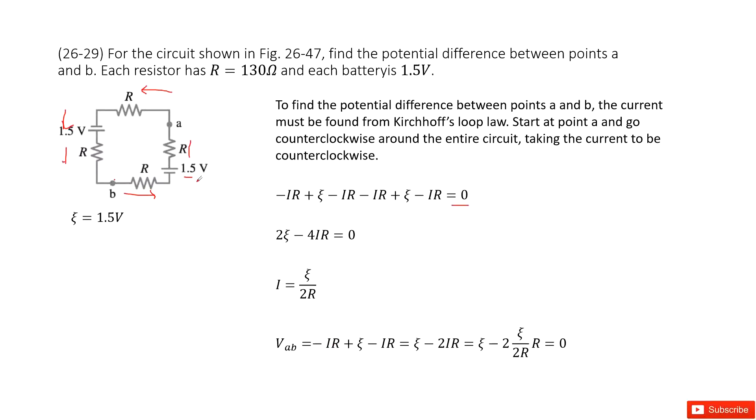Plus the battery epsilon, then it goes through another resistor R, so negative IR. Plus epsilon, negative IR. This becomes 2ε - 2IR. Substituting I, we get this equals zero. So the potential difference between A and B is zero. Thank you.